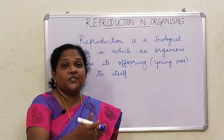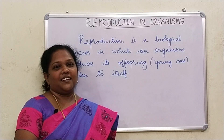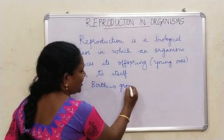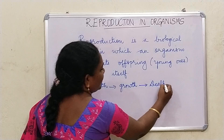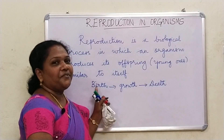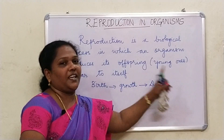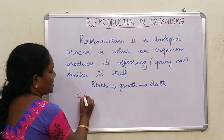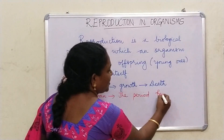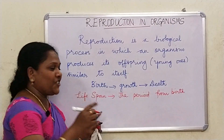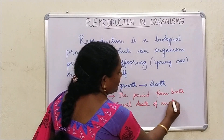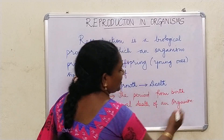So growth continues and development continues. It starts from birth, and then growth follows. We use the term lifespan — the period from birth to the natural death of an organism is called lifespan.